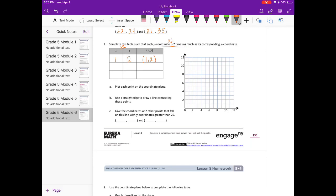If I do 2 times 2, my y is 4. And if I do 3 times 2, my y is 6.